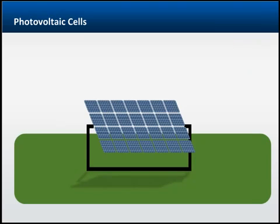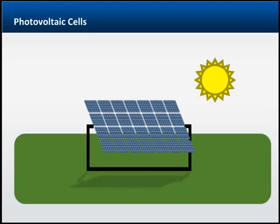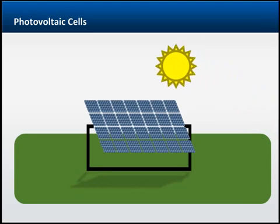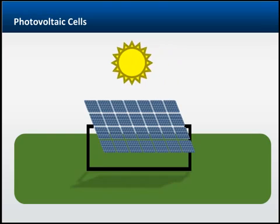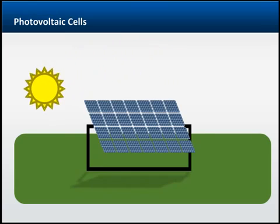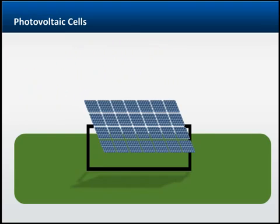Modules are combined into arrays to obtain the desired power output at a specific location. The cheapest way of mounting the arrays is to use a fixed mount, which does not allow the array to move. The downside is that the array will not be oriented to the sun to receive maximum sunlight as it moves throughout the day.